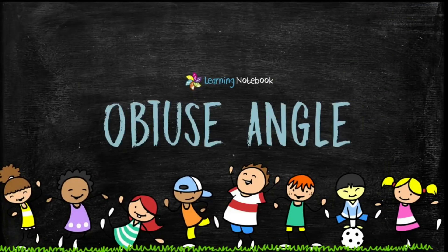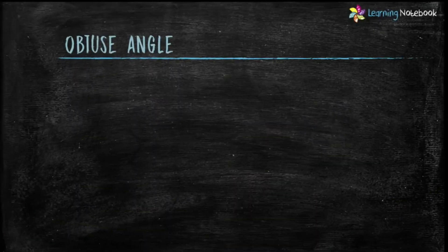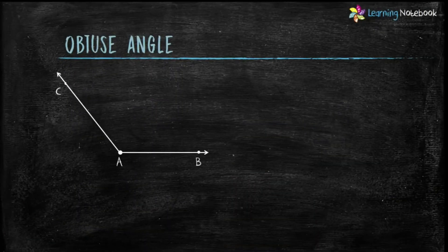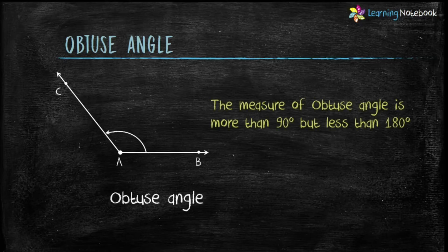The third type of angle is obtuse angle. The measure of an obtuse angle is greater than 90 degrees but less than 180 degrees. So here in this figure, angle BAC is an obtuse angle.